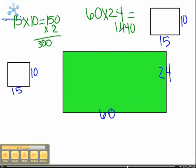Then you take 1,440 minus 300 to equal 1,140.